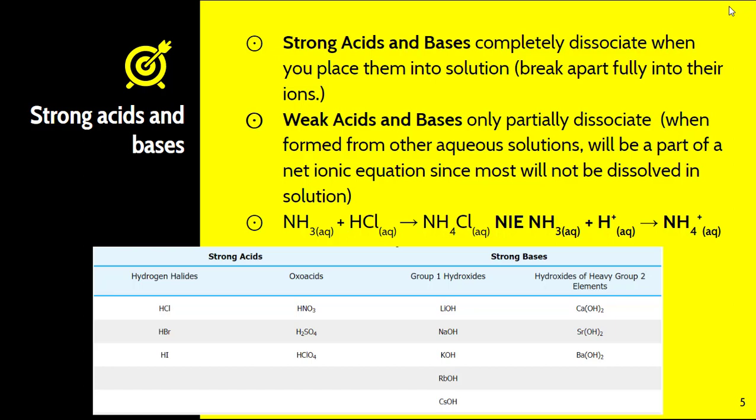Weak acids and bases only partially dissociate. When they're formed from other aqueous solutions they'll be a part of the net ionic equation since most of the material will not be dissolved into the solution. So if we take a look here we have NH3 and HCl. NH3 accepts the hydrogen from HCl thus becoming NH4+. So as a result that is actually a part of our net ionic equation because it is something that changes even though it is still aqueous in solution. Chlorine is the only thing that does not change here.